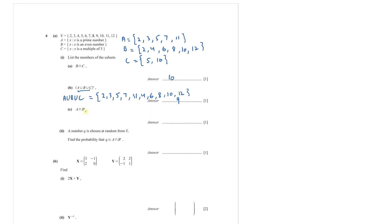Find A ∩ B'. First find B': since B is the set of even numbers, B' is all the odd numbers in the universal set: {3, 5, 7, 9, 11}. Now find common elements between A = {2, 3, 5, 7, 11} and B' = {3, 5, 7, 9, 11}. The common elements are 3, 5, 7, and 11. So A ∩ B' = {3, 5, 7, 11}.